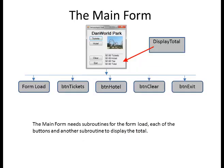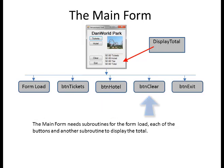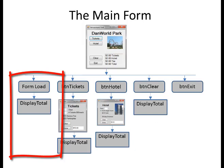For the main form, there's a subroutine for display total. We also have event handlers for form load, button tickets, button hotel, button clear, and button exit. The form load event handler executes when the form is first loaded and is going to call display total — it should show all zeros. The button tickets event handler should bring up the tickets form.